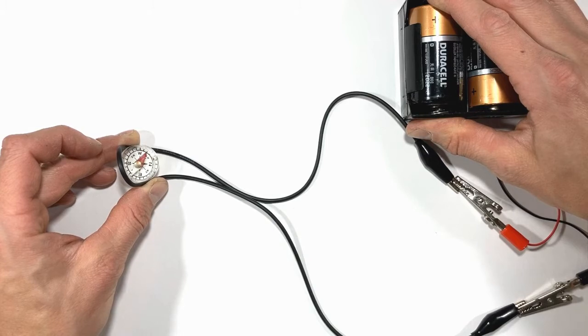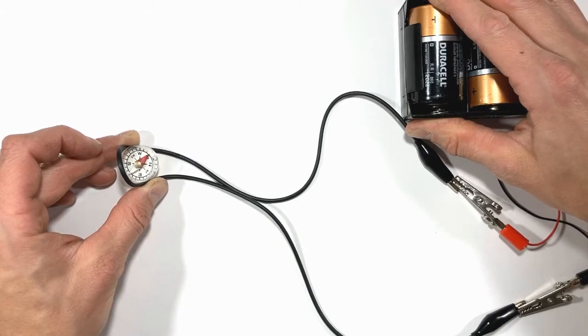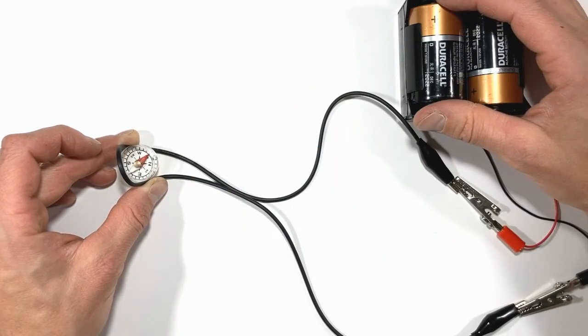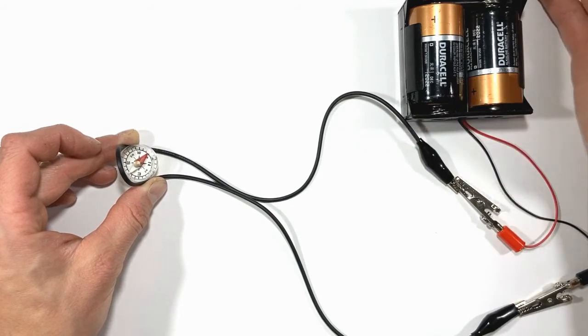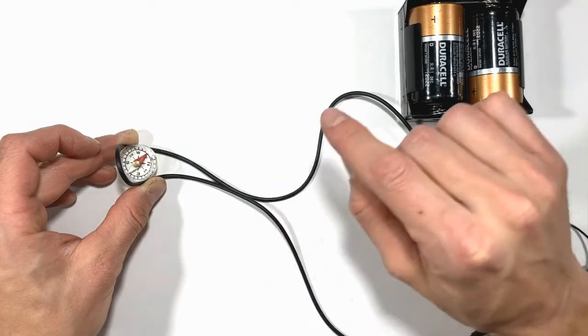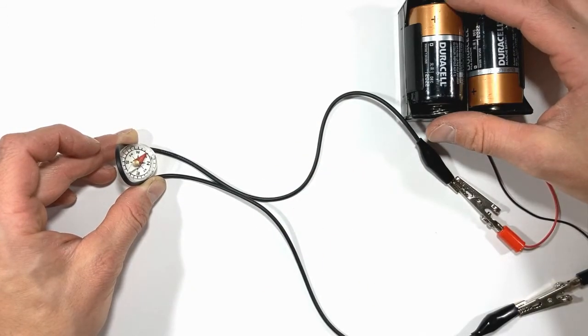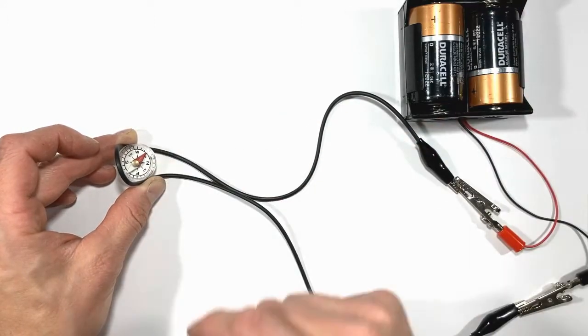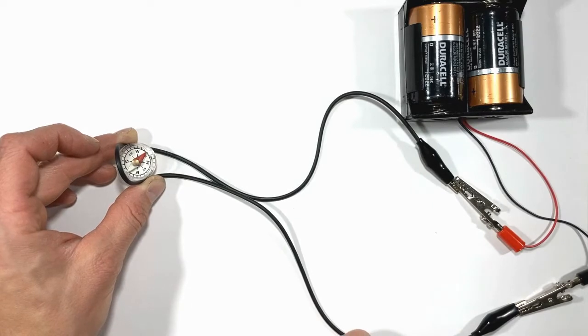The compass will always try to align itself to the magnetic field in which it's been placed. Normally that compass is aligned with the earth's magnetic field, but when I run a current through this wire, the moving charge produces a magnetic field that's stronger than that of the earth, and the compass aligns with the new magnetic field that's been created.